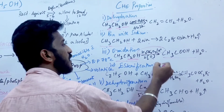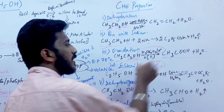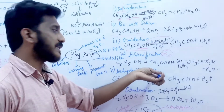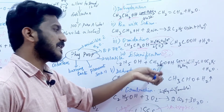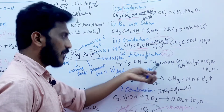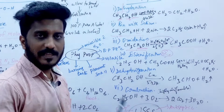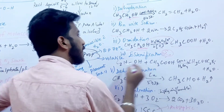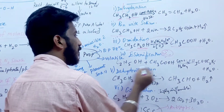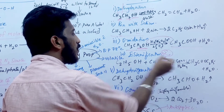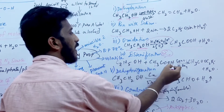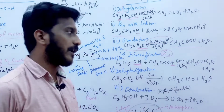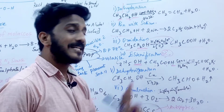Esterification is a very important reaction used in the perfume industry. When ethanol reacts with ethanoic acid (also called acetic acid, CH3COOH), you get CH3COOC2H5 — an ester — and H2O is eliminated. This product is called an Ester.